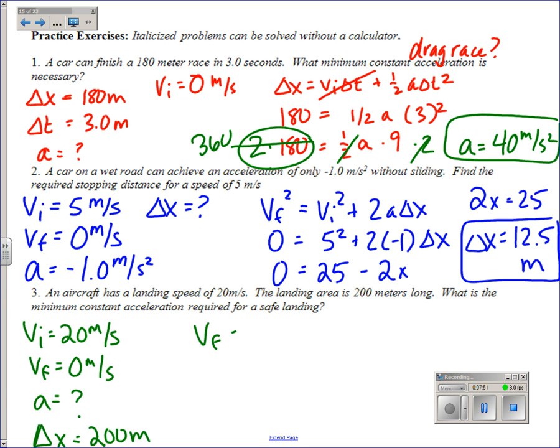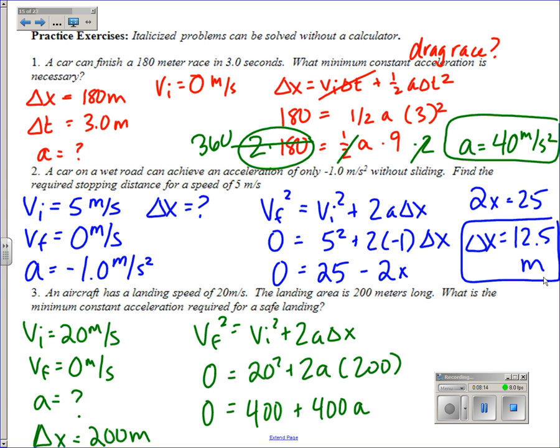So we're actually using the same equation. 20 squared is 400, so hopefully you can see that a is negative one meter per second squared.